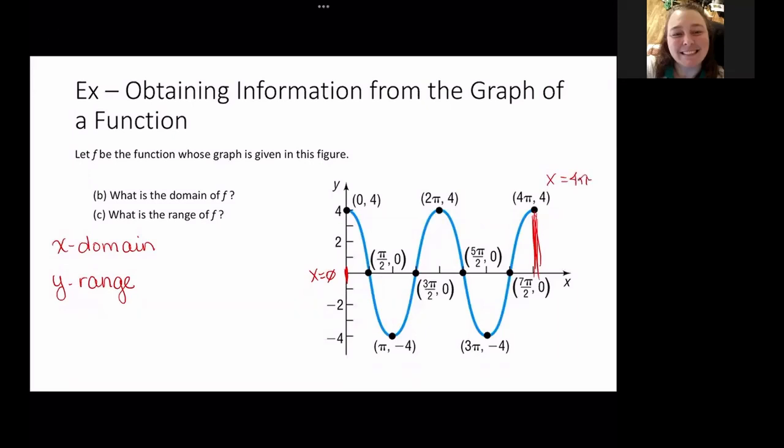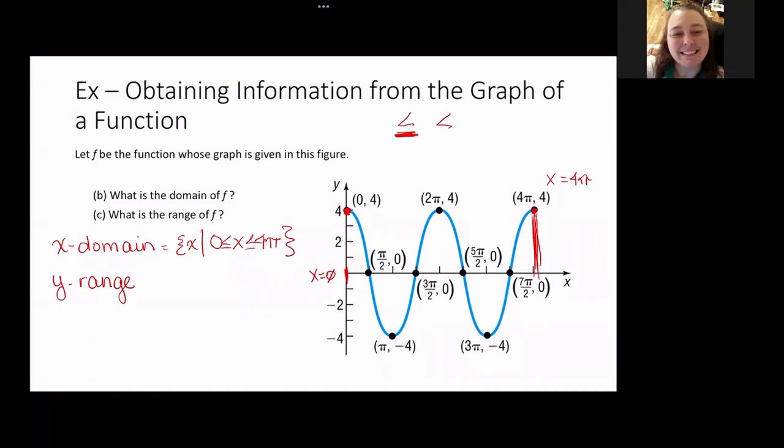My domain is all x's between 0 and 4π. Now, let's take a closer look at whether it's inclusive or exclusive, because inclusive is going to give us the underline or equal to. This actually has a point. It's a closed-in point, so it's inclusive. This one also has a colored-in point, so it is inclusive. So that's my domain.